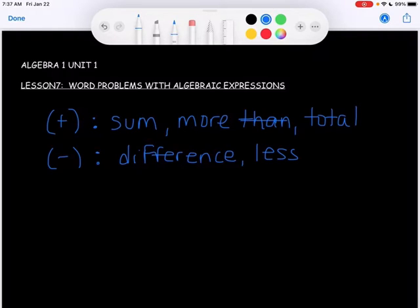We also have multiplication. So product is a big one. Double, twice, times.